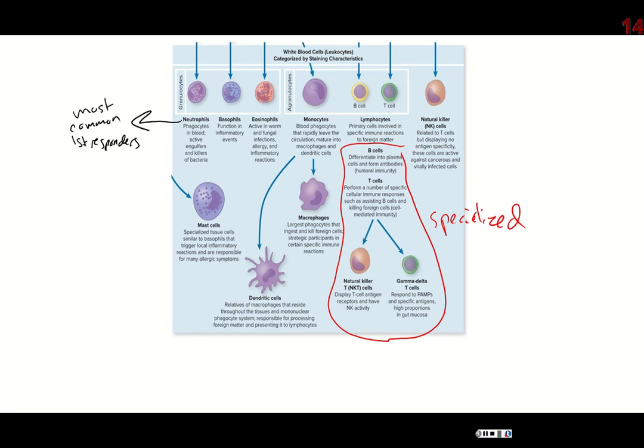The moment something punctures your skin — you got a little cut and some bacteria entered — neutrophils are right there to fight off that infection. If you start seeing pus from a wound, that's actually all of these neutrophils along with some macrophages there fighting the good fight and dying as part of the process. That's why pus looks kind of white and yellow — millions of cells are fighting and some of them die while doing this.